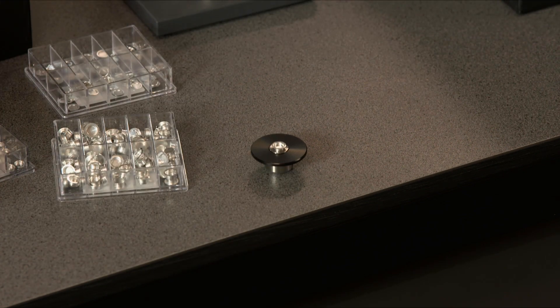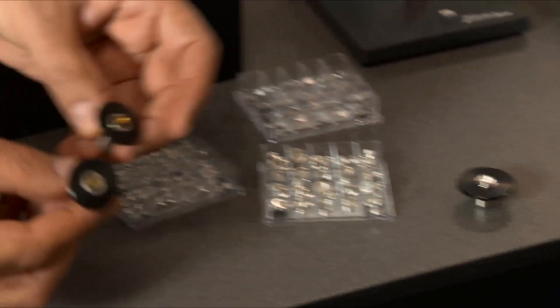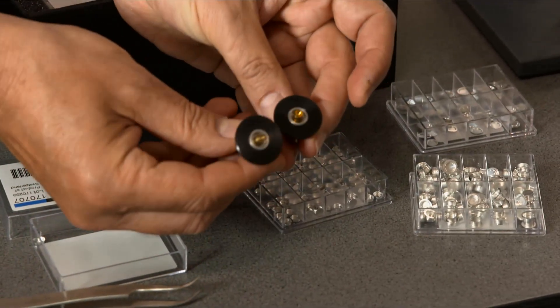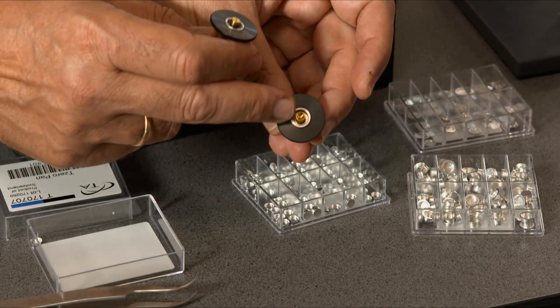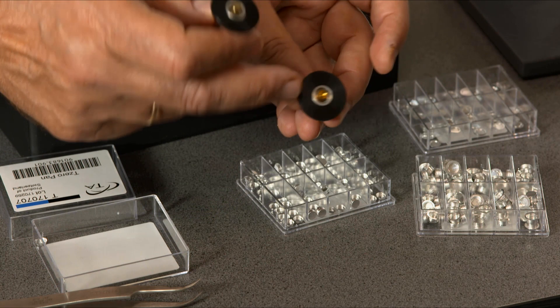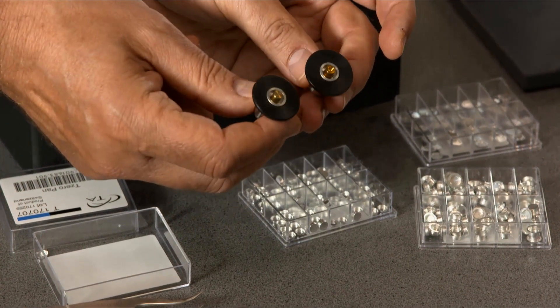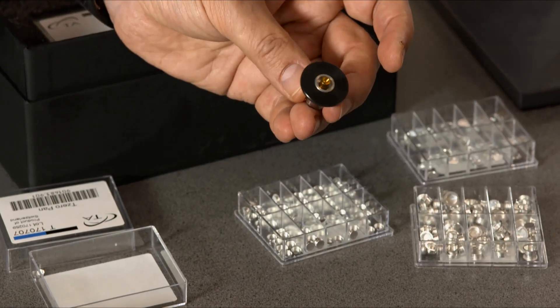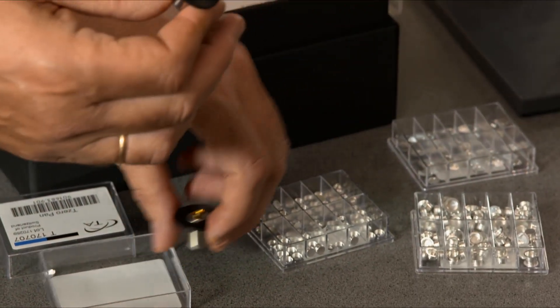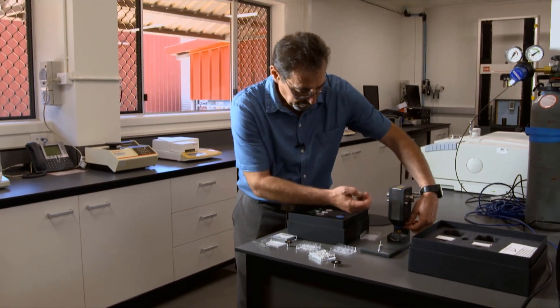Now the difference between those two upper dies is one is flat and another one has concave. The one with concave tip is used when you run pieces of polymers so that you form a little dome on top of it. So in this particular case, I am going to use flat one. I remove the one which we used before.